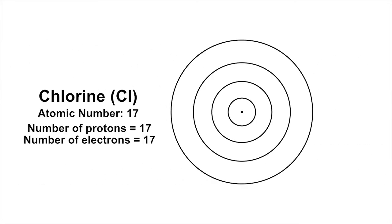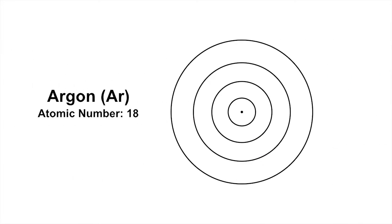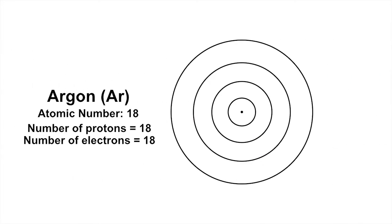Chlorine has 17 electrons, 2 in the first shell, 8 in the second shell, and 7 in the third shell. Argon has 18 electrons, 2 in the first shell, 8 in the second shell, and 8 in the third shell.